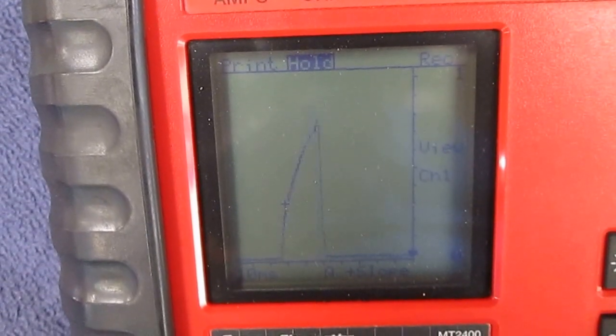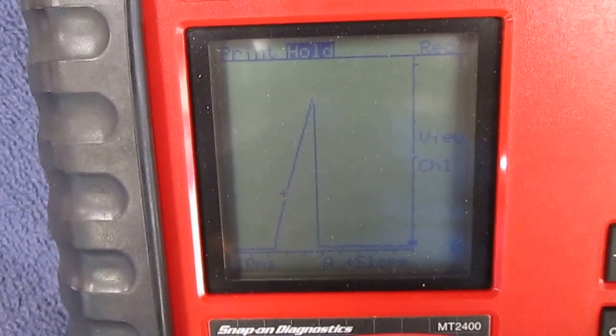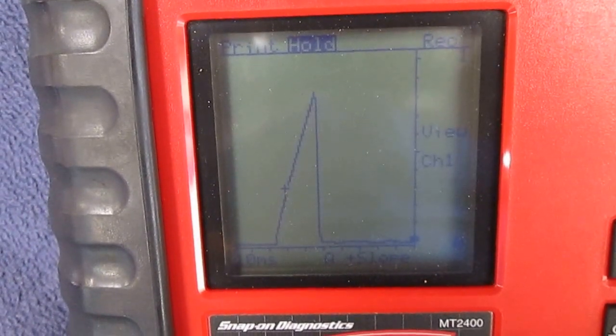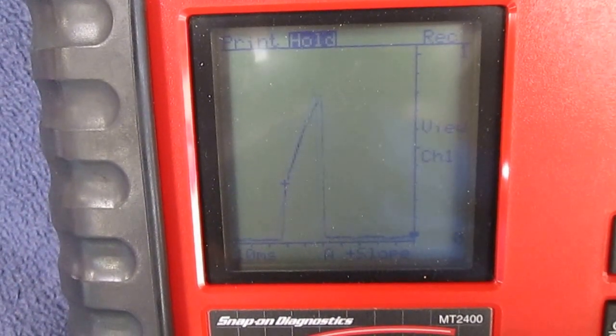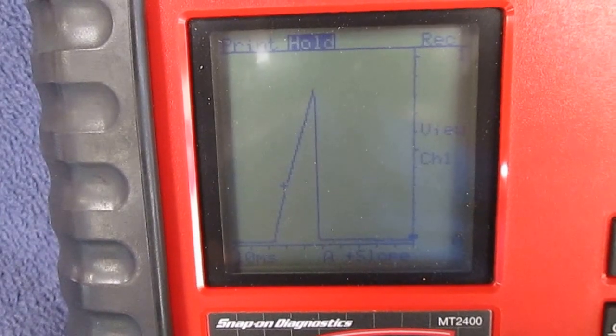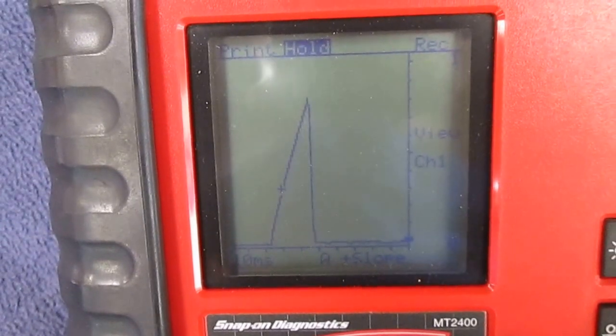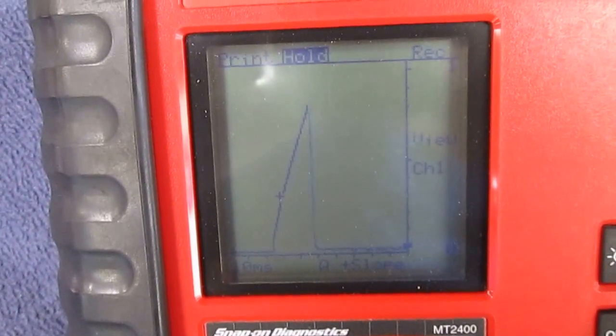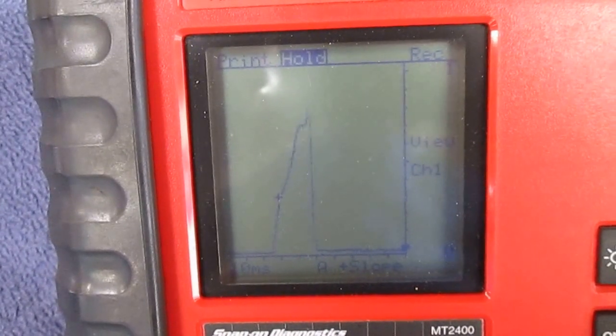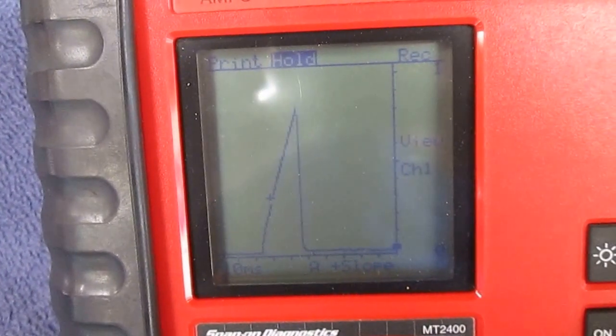Hi everybody, we're here at John Sadler's Auto Repair and we're doing current ramp testing on an ignition coil on an E420 Mercedes. It's supposed to have a nice tapered line coming straight up on the front and go straight down on the back line.